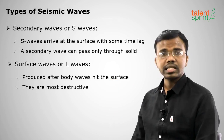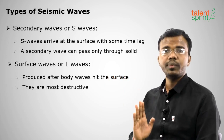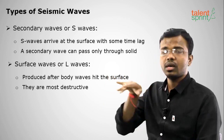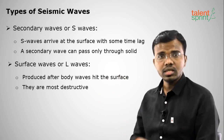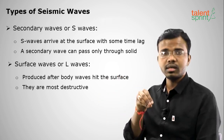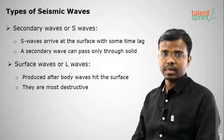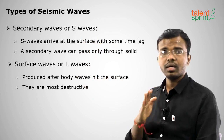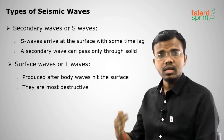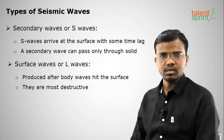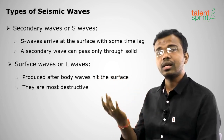The last waves are the surface waves or L waves. They are produced after the P and S waves touch the surface. These are more destructive because they cause the damage — the surface waves move from the epicenter and nearby buildings will collapse. So the order of waves reaching the surface is: first P waves, then S waves, then L waves. This order is sometimes asked in exams.